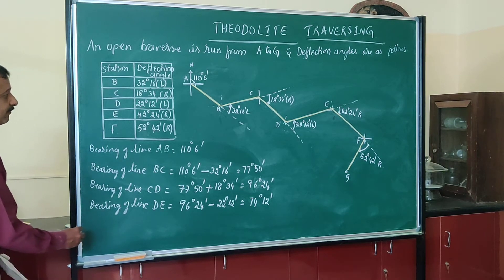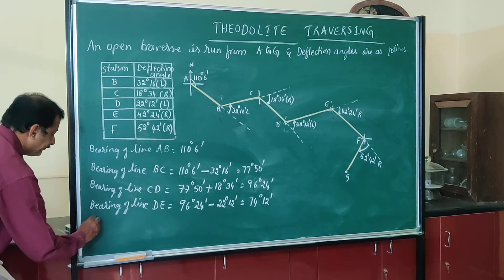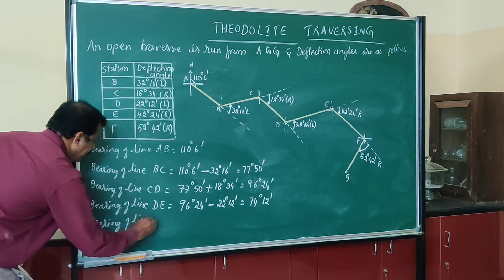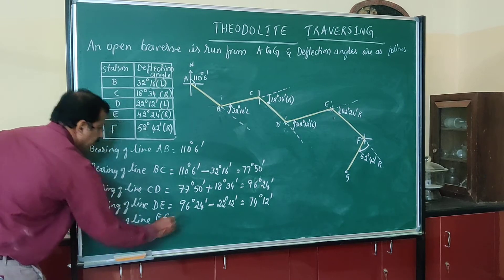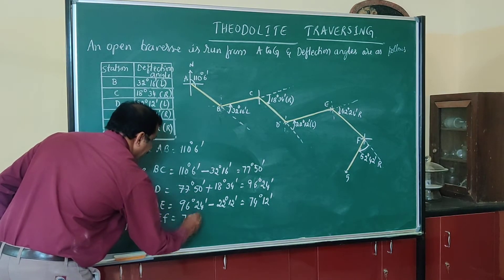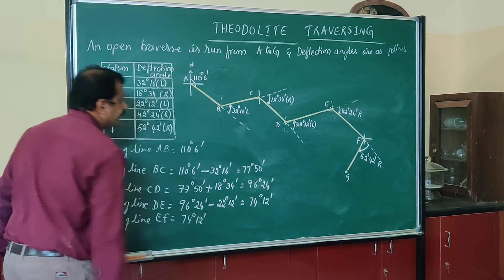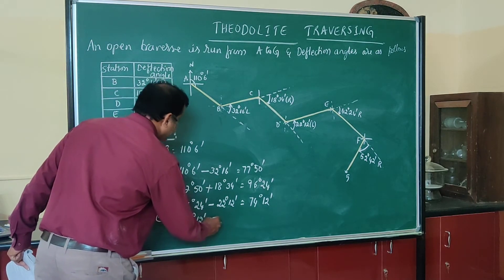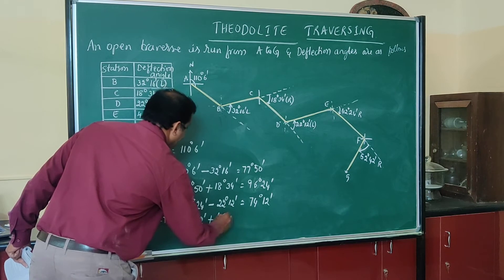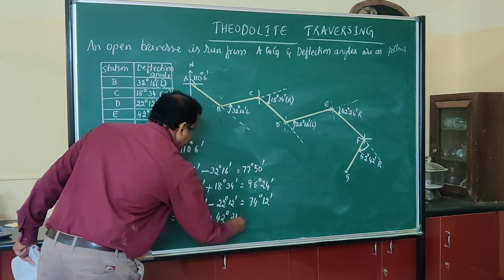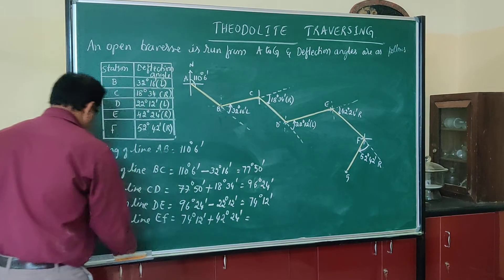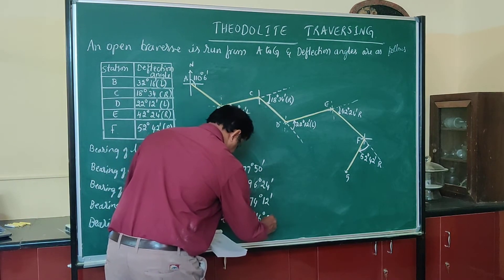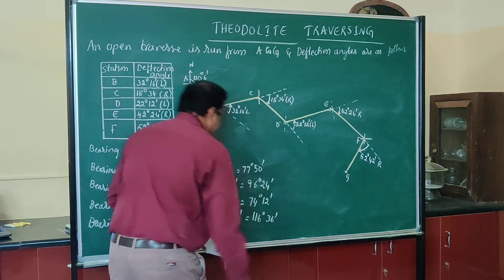Similarly, bearing of line EF equals the previous bearing 74 degrees 12 minutes. The deflection angle at E is to the right, so we add: 74 degrees 12 minutes plus 42 degrees 24 minutes. The bearing of line EF is therefore 116 degrees 36 minutes.